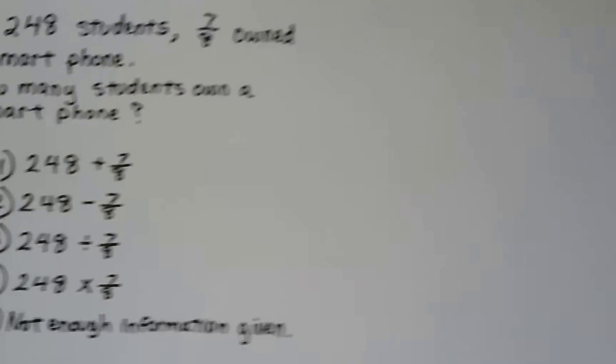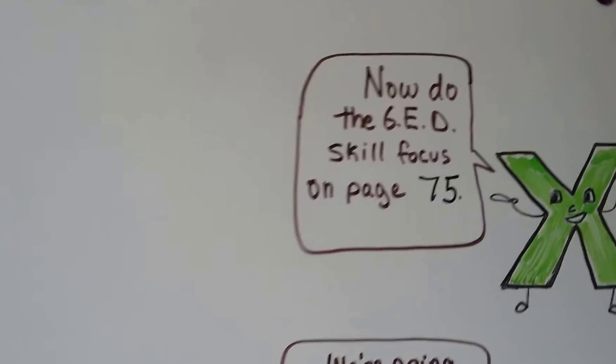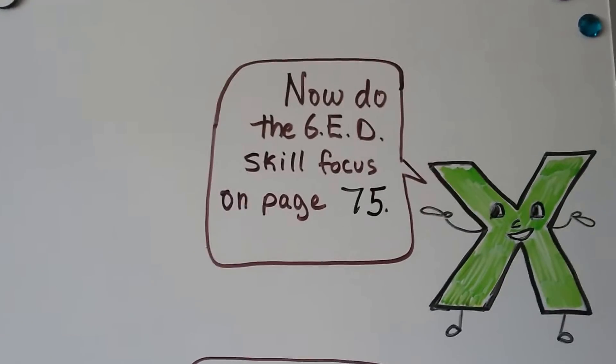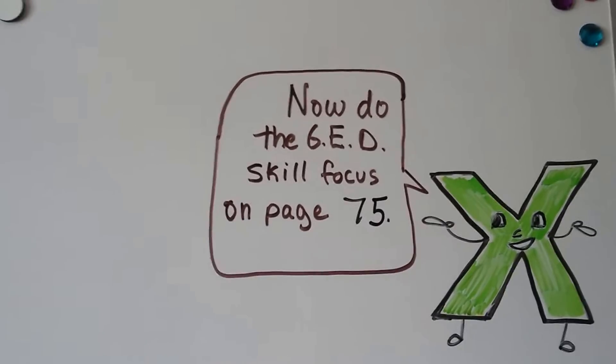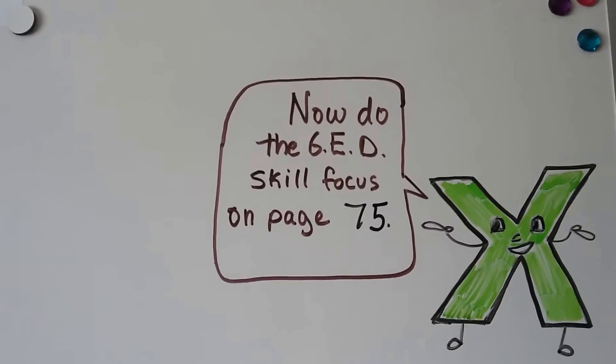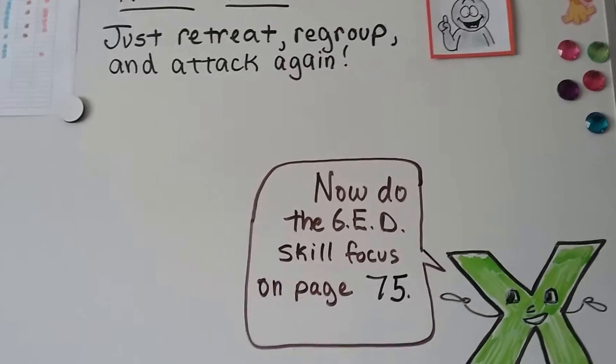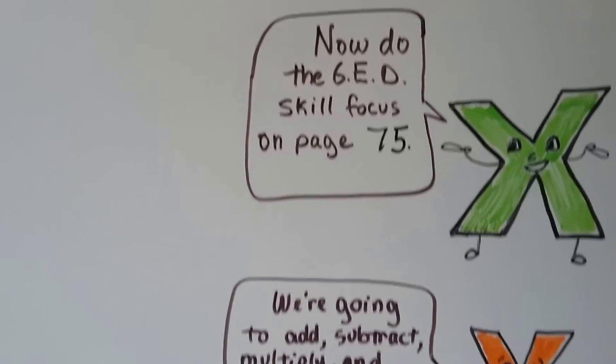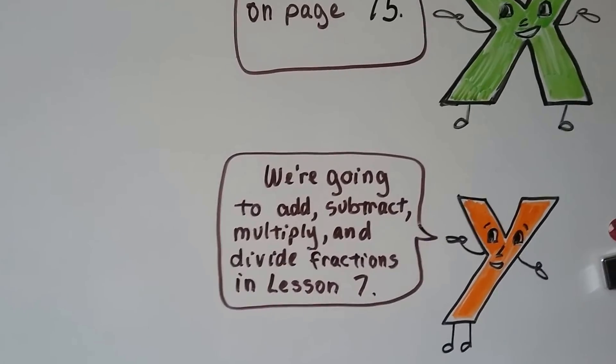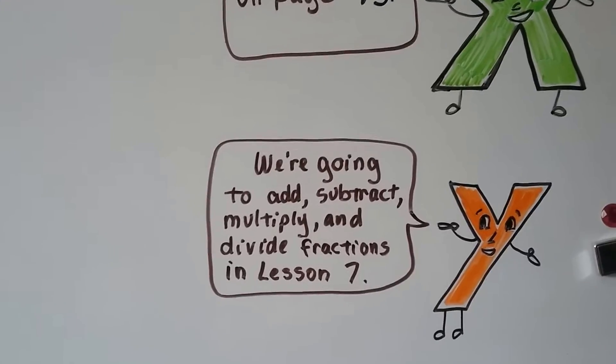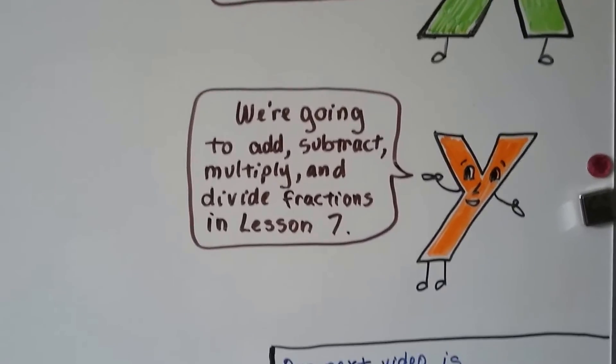So you should now be ready to do the skill focus on page 75. And if you do well and you're okay, then you can move on to the next lesson. If you're having trouble, remember, retreat, regroup, and attack again. So because we're going to be adding, subtracting, multiplying, dividing fractions in lesson seven, you need to know what you're doing now before you move forward. Okay?